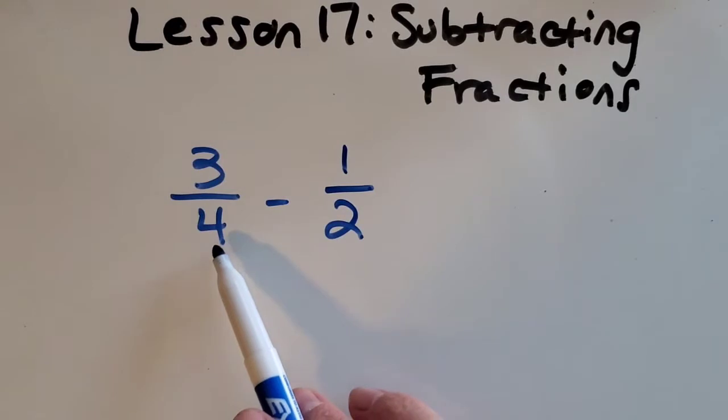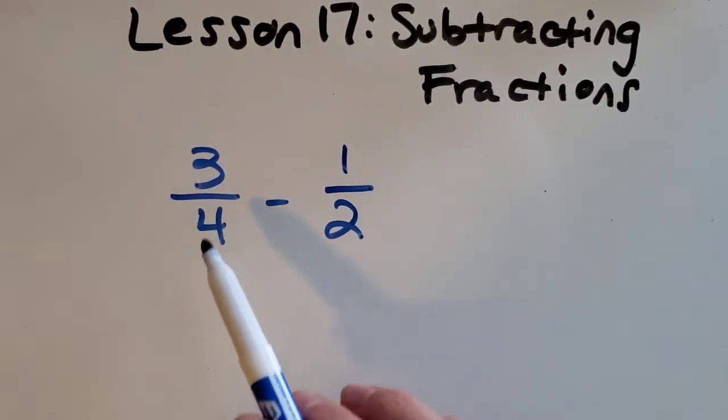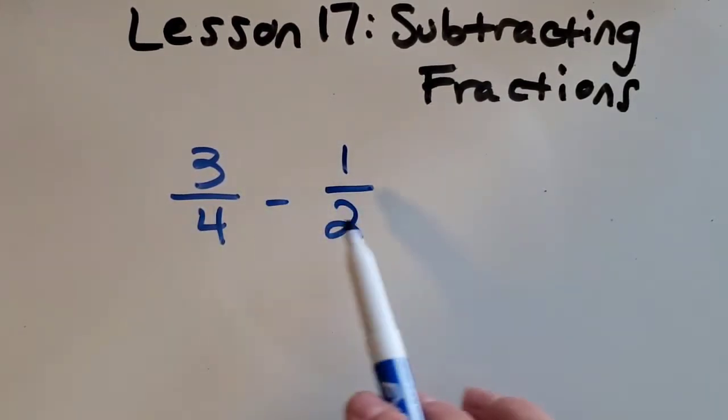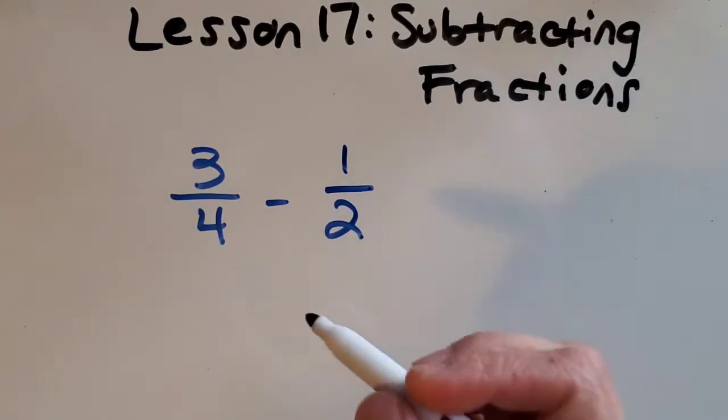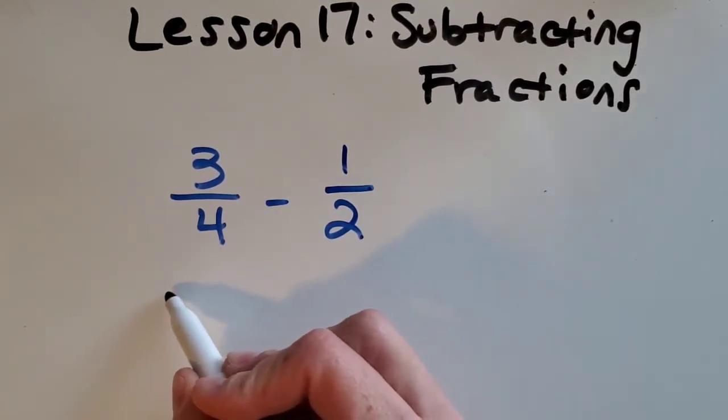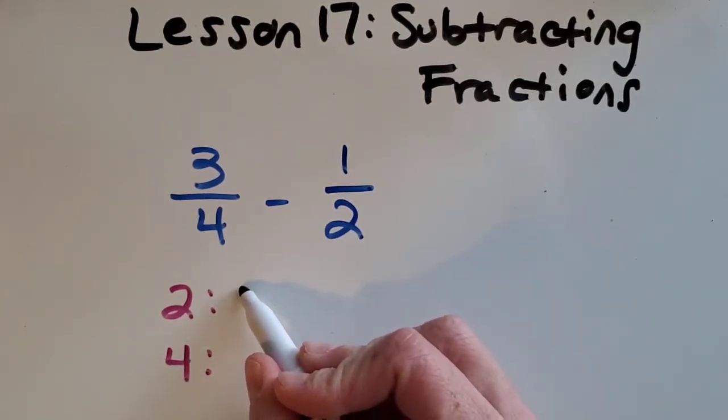So right here we can see that we've got fourths and halves. There's no way to subtract these just like it is because if you did 3 minus 1 you'd get 2, but then you wouldn't know what denominator to use so it just wouldn't quite work out. So let's work on finding something that these two denominators have in common. The quickest way to do that I like to just list the multiples of 4 and 2 and wait till I find something they have in common.